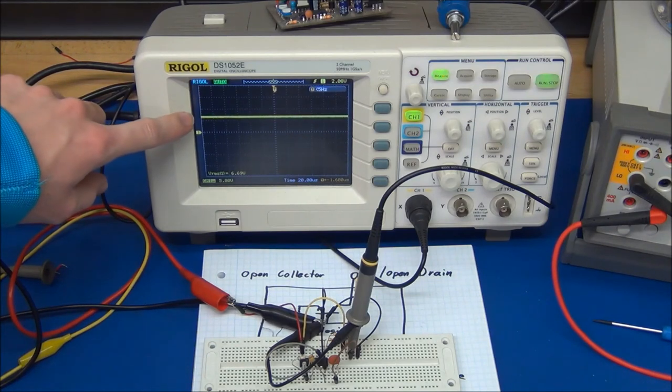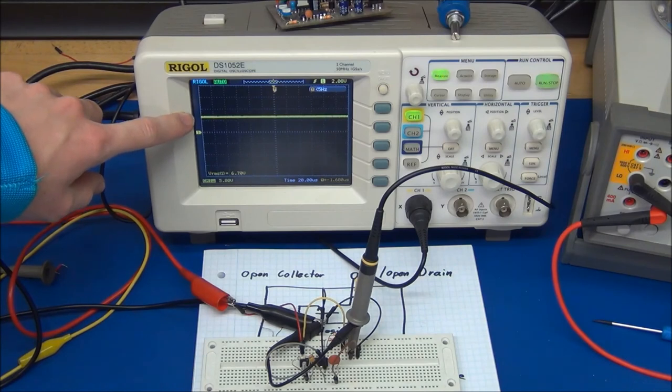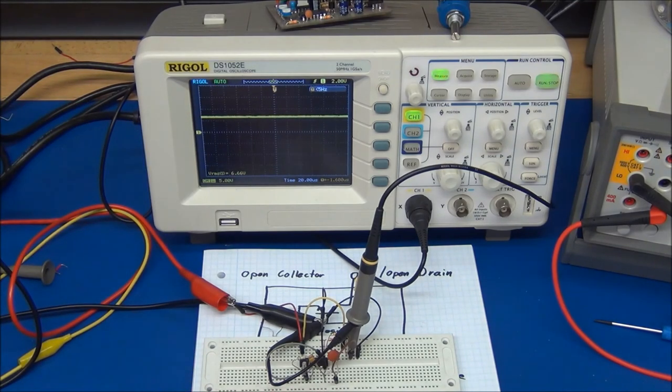And you can see the oscillation has gone, and the output is just at the positive voltage rail. Because there's no way the transistor can pull down the charge of the capacitor, so it will always stay at the upper rail.